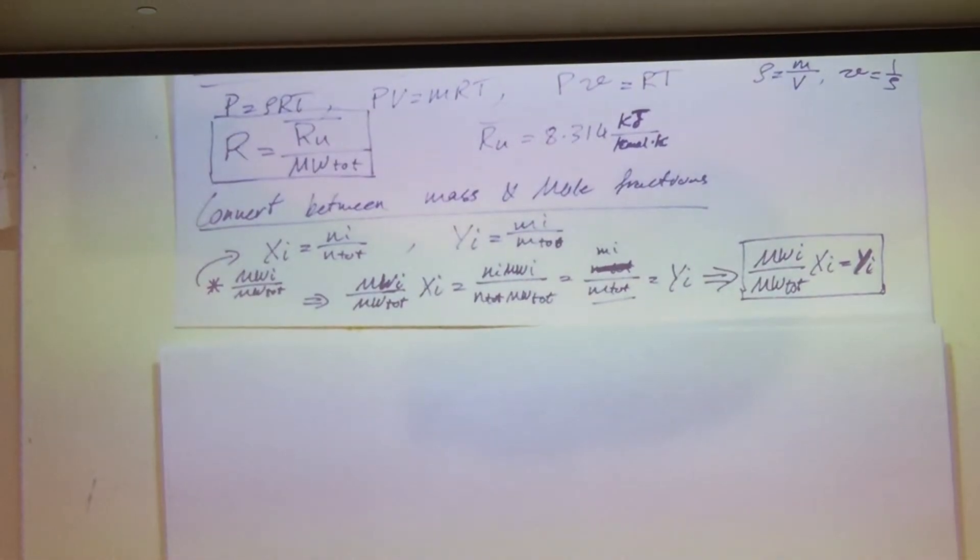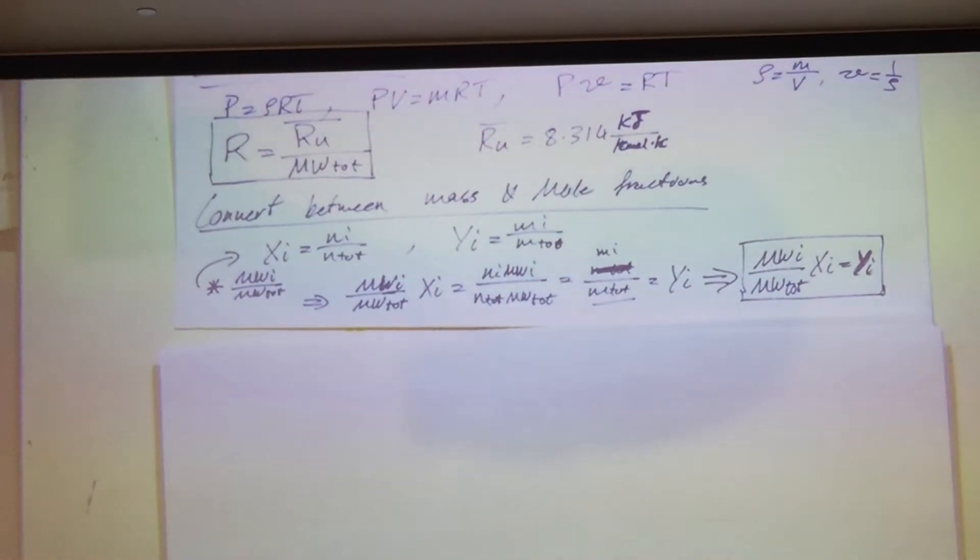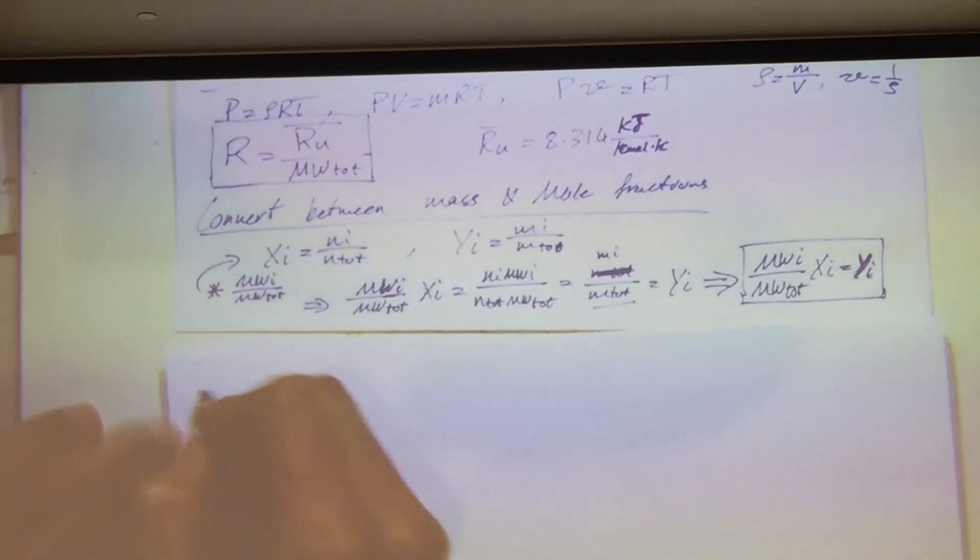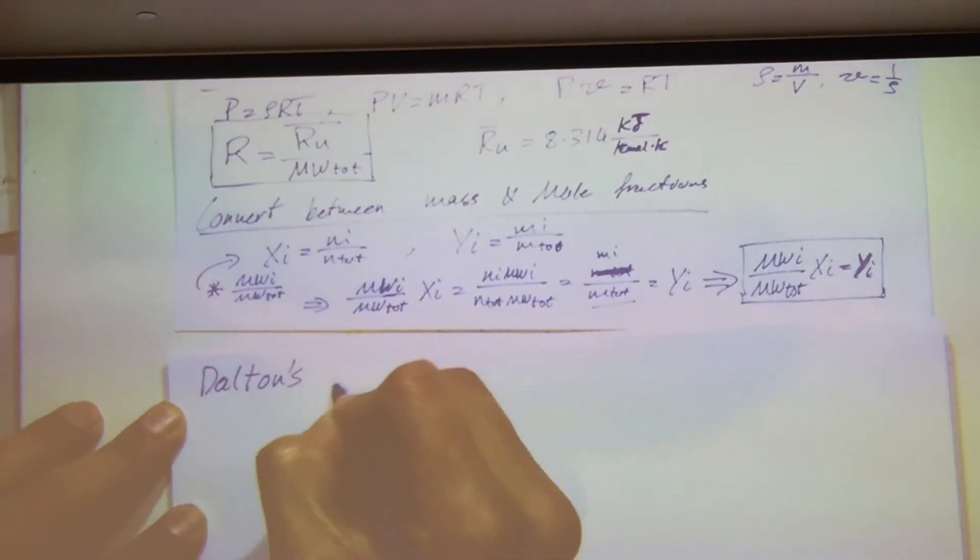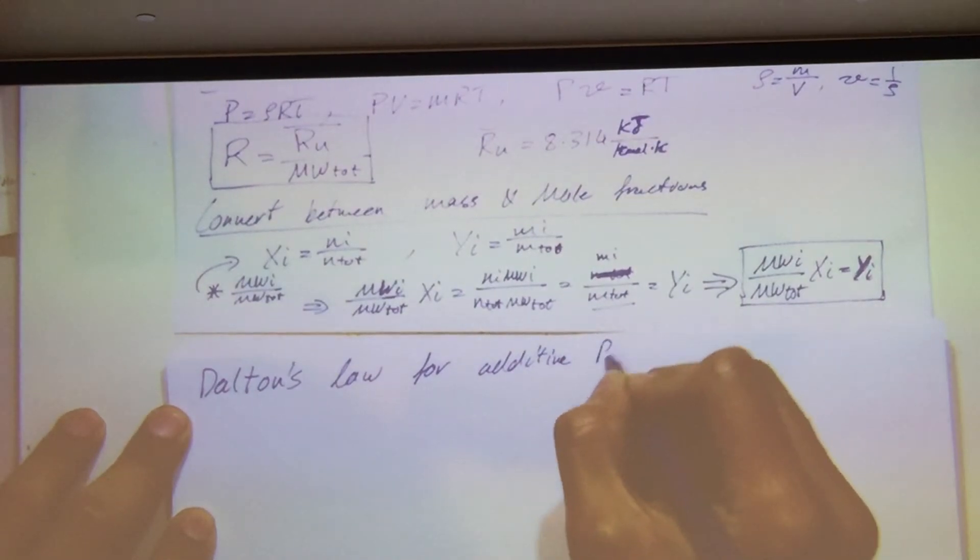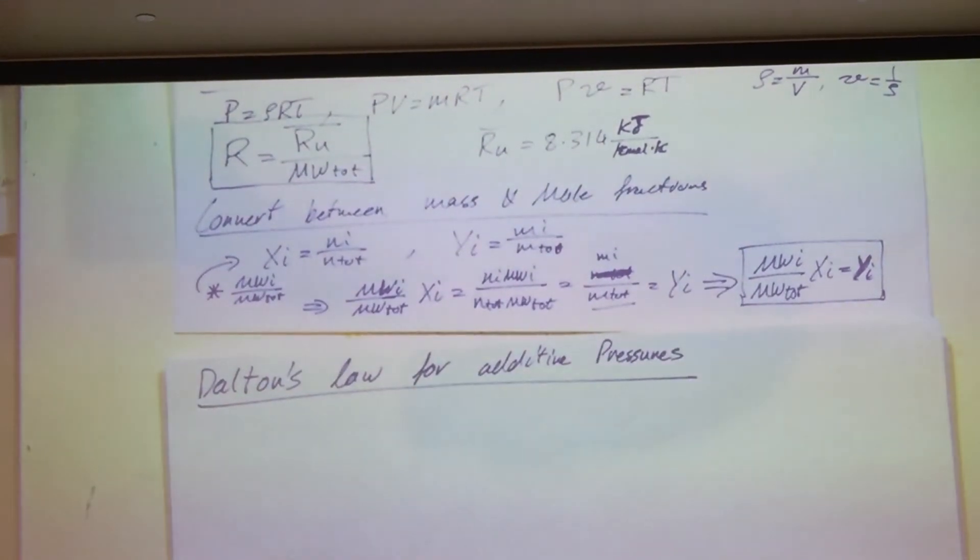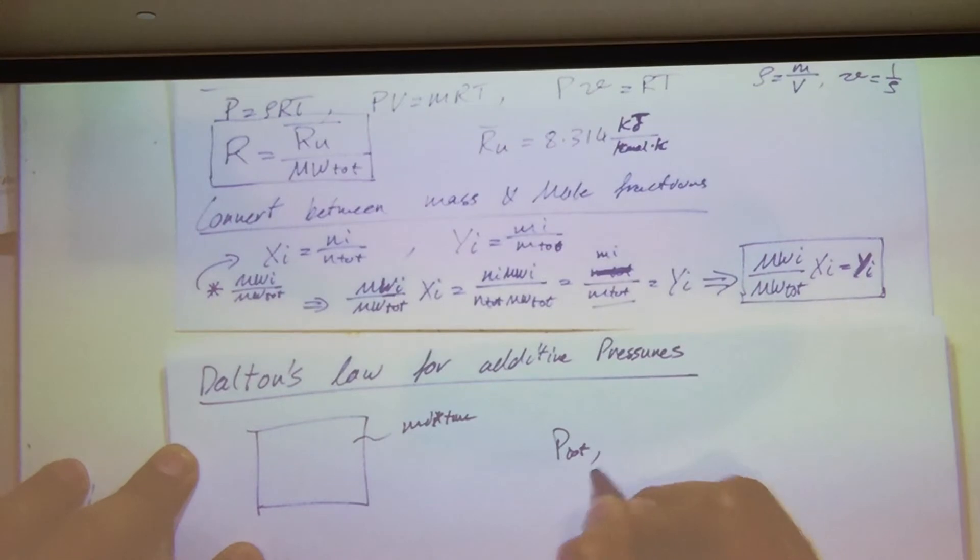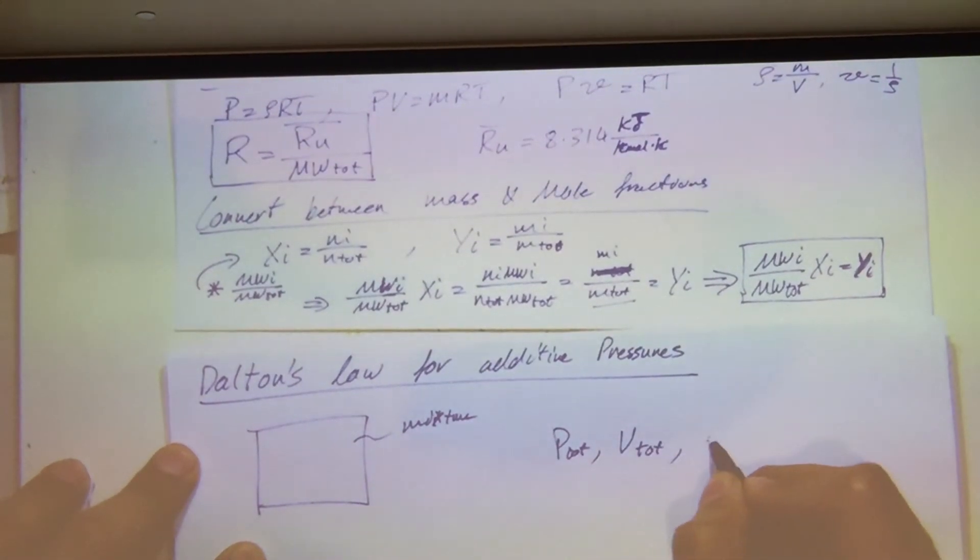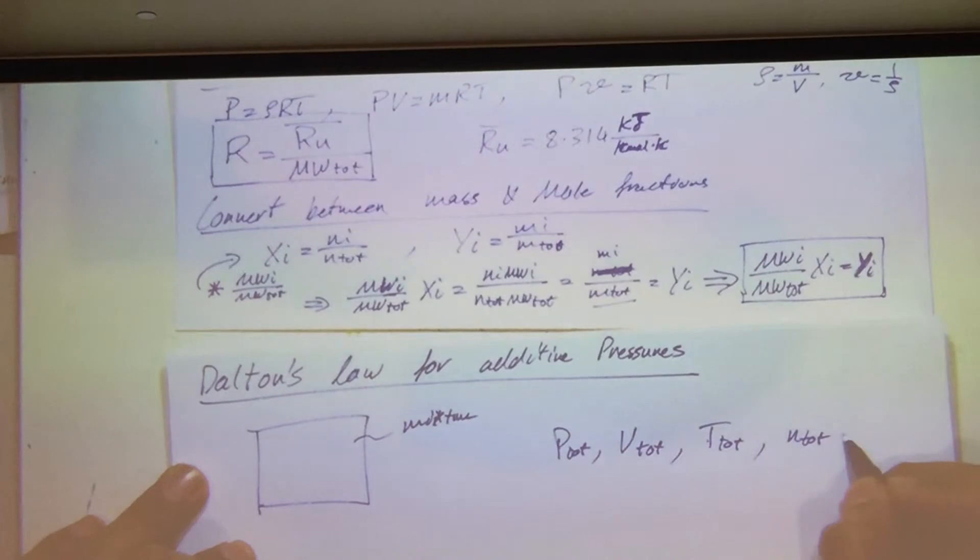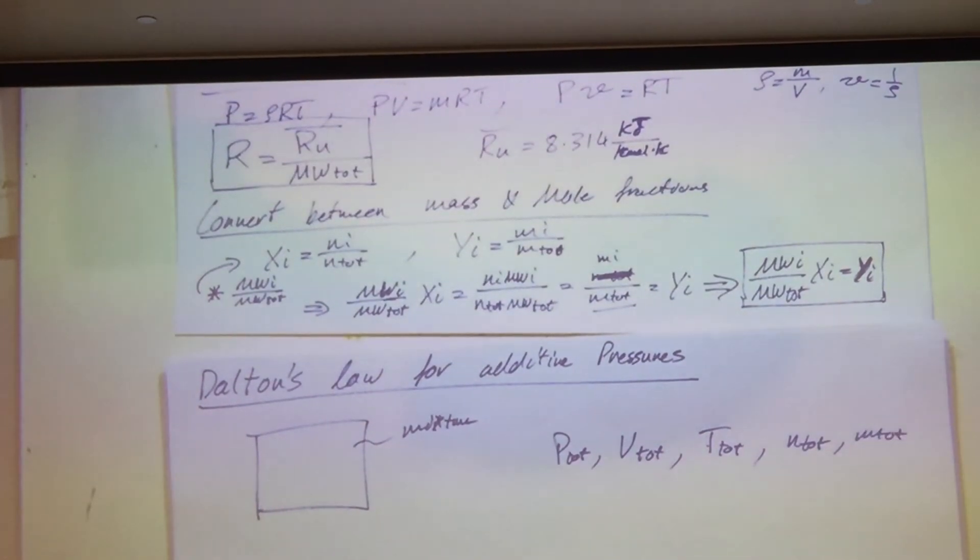So with that taken into consideration, there's also pressure variations that are associated with these species because they have, let's face it, different densities and so forth. So we're going to use Dalton's Law for additive pressures. And saying that if I have some mixture right here, I have P total, P total is a volume total, T total of the mixture that we got out of mixing the two gases, N total and M total, total mass and total moles that I have.